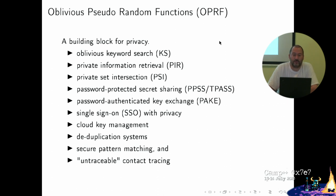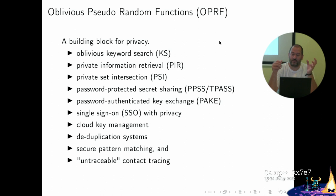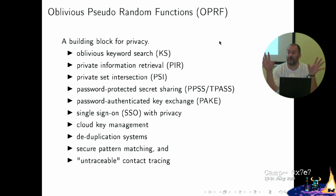OPRFs can be used for oblivious keyword search, where a server has a database and you make queries with a keyword the server doesn't learn — it doesn't learn what your query is or what it responds with. Private information retrieval is similar, but instead of keywords you know the index of the record you're querying, and the database doesn't learn which record you want. Private set intersection is when two parties have sets of values and want to find which values are common without revealing any other values in their own sets.